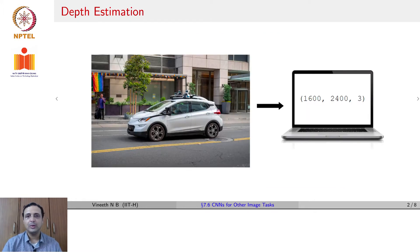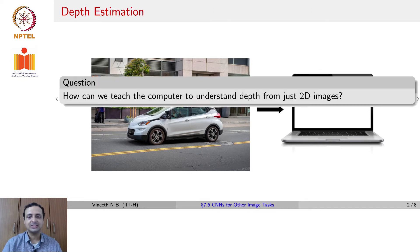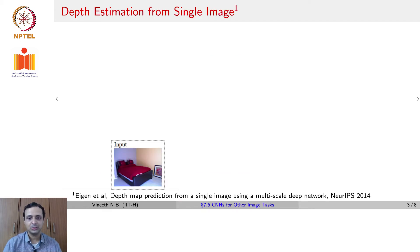The question that we would like to ask here is, can we get estimates of depth using just single images? Existing methods for depth estimation, including the human visual system, rely on stereo estimates where there are two cameras. But the question we would like to ask now is, can you get depth from just a single 2D image? And there have been efforts to do this.